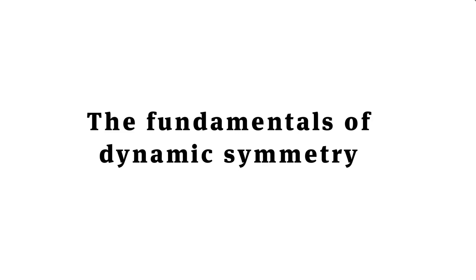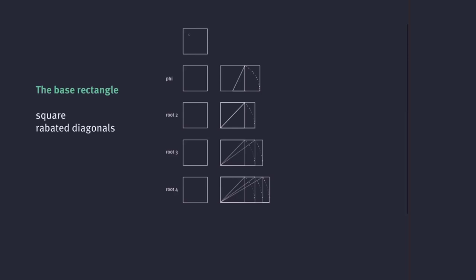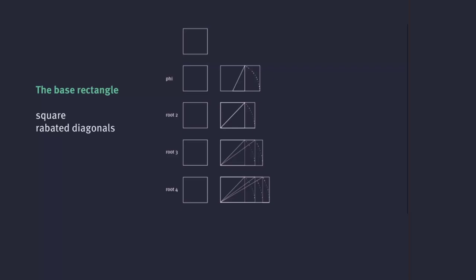Dynamic symmetry is based on several things to understand. The first is that it's based on specific rectangles — it's not a grid you can slap on any type of rectangle. It has to be used on specific types of rectangles for it to actually work. You always need to work from a square, and from that square you can do different types of things. The first thing is to build a phi rectangle, which is built by rotating the mid-diagonal.